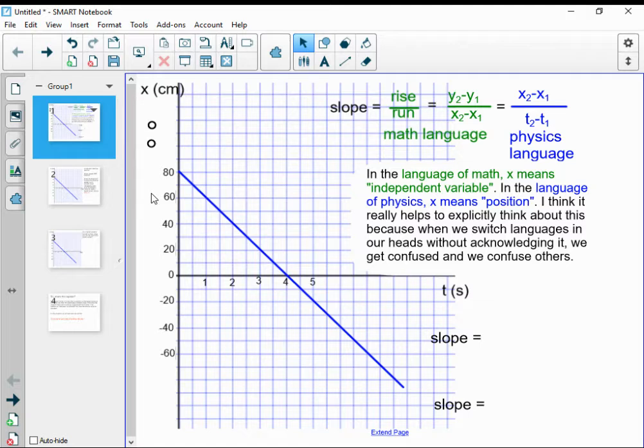So we just want to be careful about thinking, am I talking math talk? x and y mean independent variable, dependent variable. Am I talking physics talk? x means position. That's just something for us to always be mindful of, and I color coded here on the screen.